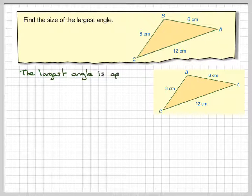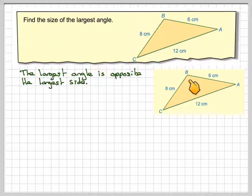So the largest angle is always opposite the largest side, so the angle that we're going to want to find is this one here, angle B. Likewise, the smallest one is always opposite the smallest side as well, so that would be that one.